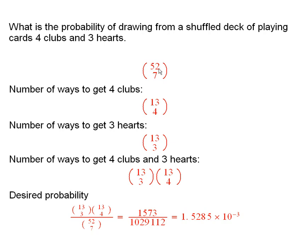we notice that there are 52 taken seven at a time, the number of ways of selecting seven cards from the shuffled deck.